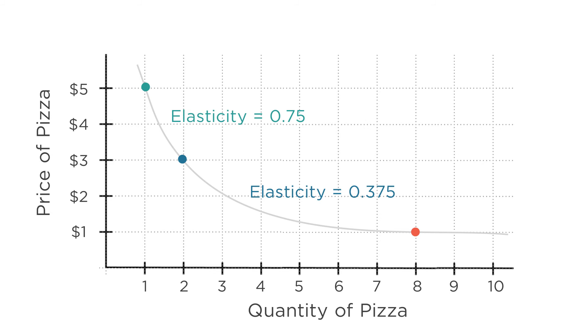So you're more sensitive to price increases when the price of pizza is $3 and you're consuming two slices than when the price of pizza is $1 and you're consuming eight slices.